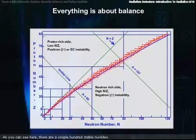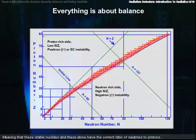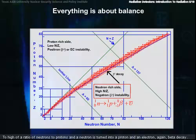As you can see here, there are a couple hundred stable nuclides, meaning that these stable nuclides and these alone have the correct ratio of neutrons to protons. Too high a ratio of neutrons to protons, and a neutron is turned into a proton and an electron. Again, beta decay.